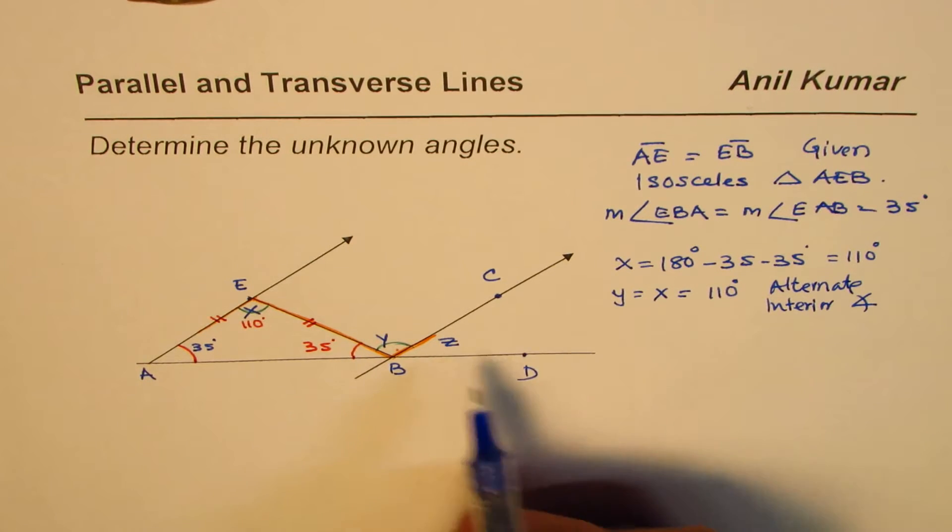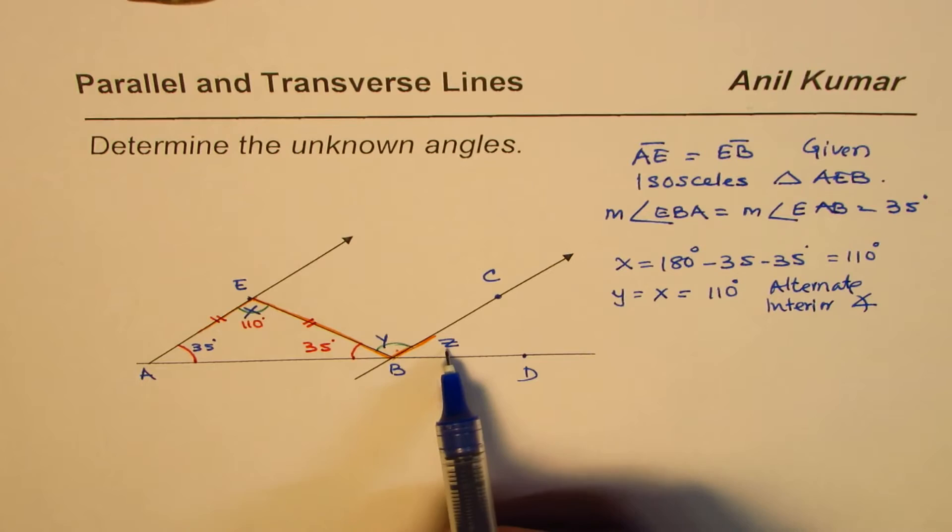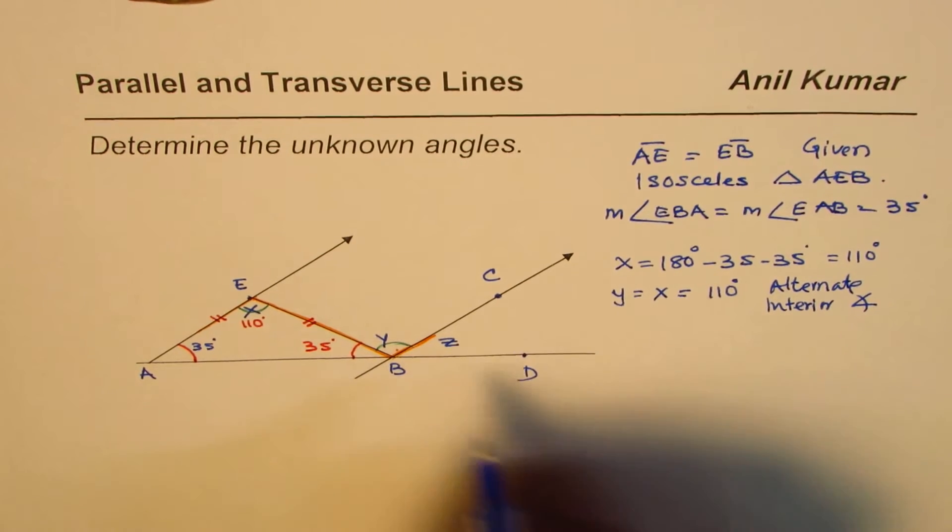You can find z as 180 minus this, supplementary angle. So linear, this line makes 180 degrees, so z is equals to 180 degrees minus.